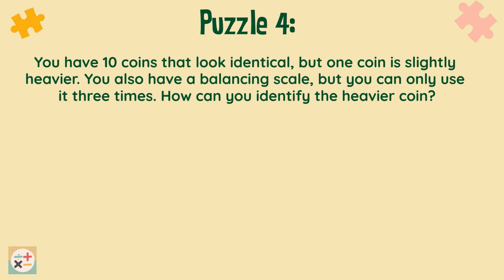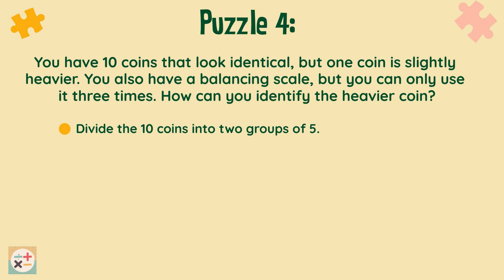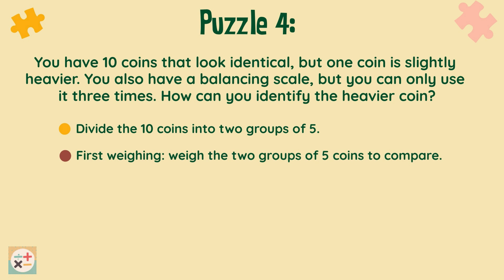Finally, let's look at how to solve puzzle 4. You have 10 coins that look identical, but one of the coins is slightly heavier. You also have a balancing scale, but you can only use it 3 times. How can you identify the heavier coin? Pause the video while you work it out for yourself. There are various methods you can use to solve this. Let's look at one possible solution. Firstly, divide the 10 coins into 2 groups of 5. For the first weighing, weigh the 2 groups of 5 coins to compare.